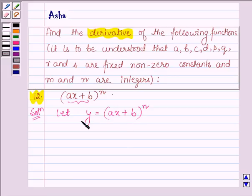Now we have to find its derivative, that is dy/dx. So we have d/dx of (AX + B) raised to the power N. This is equal to